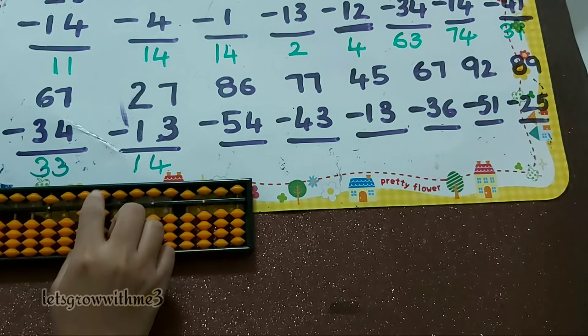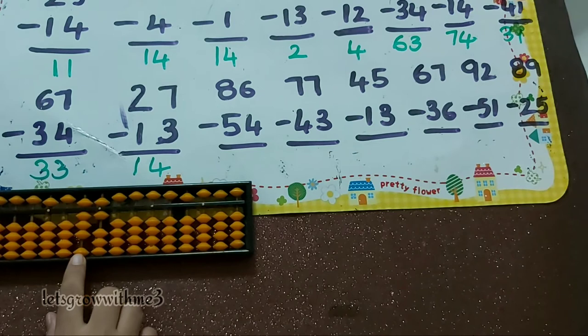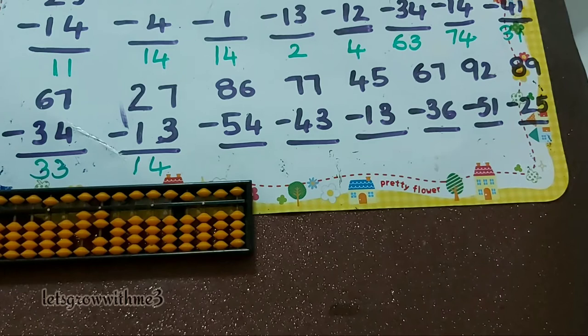Next one, 86 minus 54: minus 5, minus 4, minus 5 plus 1. So the answer is 32.